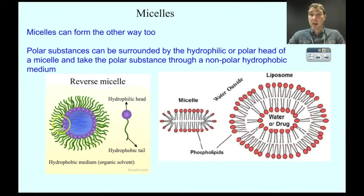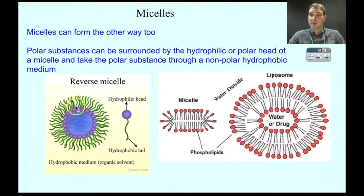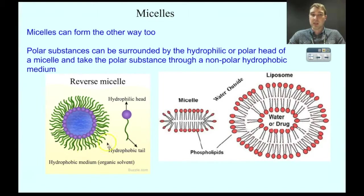Just restating again: you have a polar substance that gets attracted to the polar end of the soap molecule. Then you have your non-polar tails that are attracted to the non-polar organic solvent it's floating around in — so this could be oil, for example. The non-polar tails are attracted to the oil, but you have your polar substance stuck in the middle. So it works both ways.